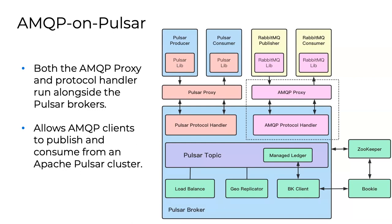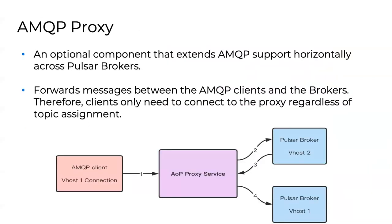RabbitMQ and AMQP are great, but they were designed in 2004 for a single system, not a horizontally distributed one. The distributed system revolution started around 2009-2010 with Hadoop, when everything became horizontally scalable. AMQP and these other systems got left behind in terms of scalability. With our protocol handler and optional proxy component, you can scale horizontally — it forwards messages, tracks virtual hosts and exchanges, handles the mapping. When a client connects to this proxy, it routes you to broker one, two, three, or four in the horizontal system.